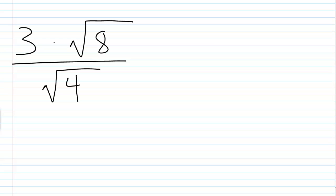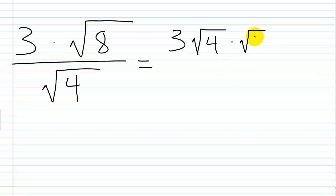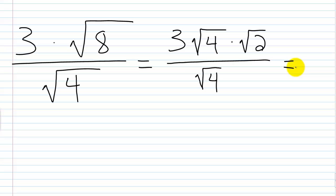One last problem: 3 times the square root of 8 over the square root of 4. I write the numerator as 3 times the square root of 4 times the square root of 2, since 8 is 4 times 2 and 4 is a perfect square. The denominator is square root of 4. Square root of 4 over square root of 4 cancels and becomes 1 — no need for the extra step of converting to 2s. I'm simply left with 3 times the square root of 2.